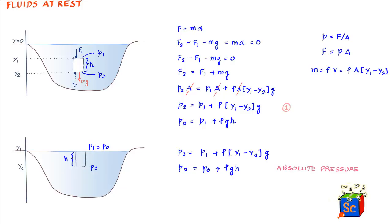Scientists refer to p₀ + ρgh as the absolute pressure at a point. Other scientists may express the pressure at the same point as just ρgh, which is called the gauge pressure — they are ignoring the atmospheric pressure above and only accounting for the pressure due to the liquid column. Both representations are valid; it is simply a matter of how scientists choose to express pressure at a point.